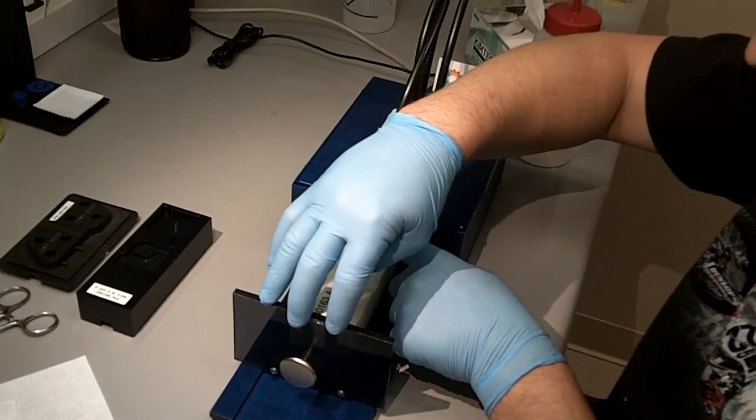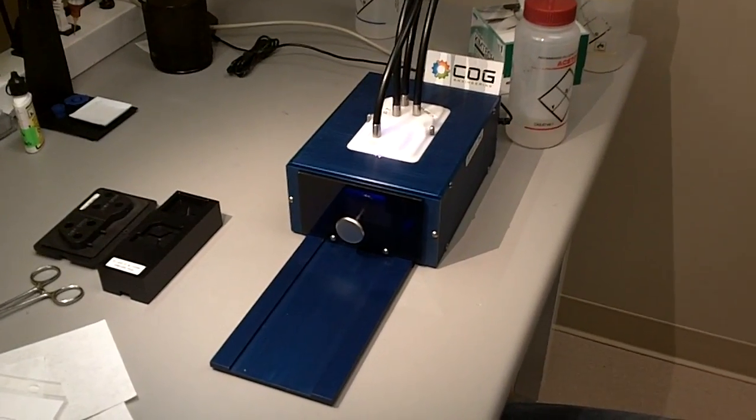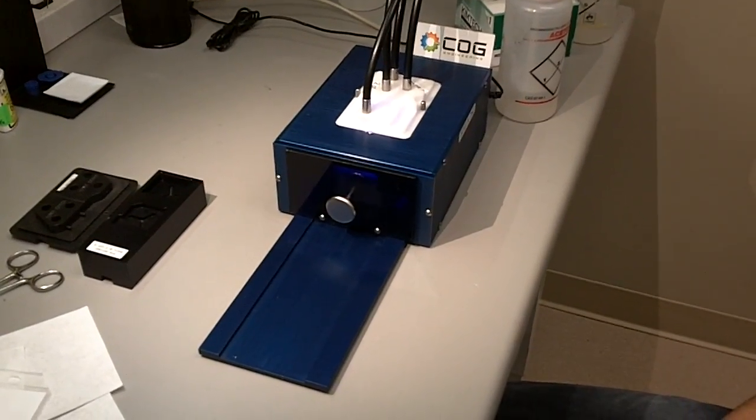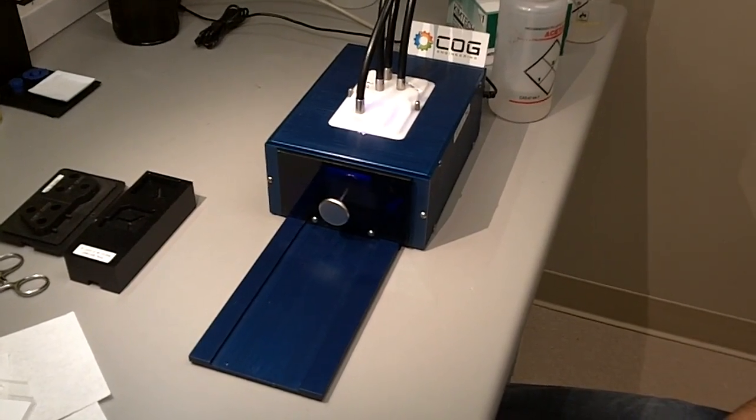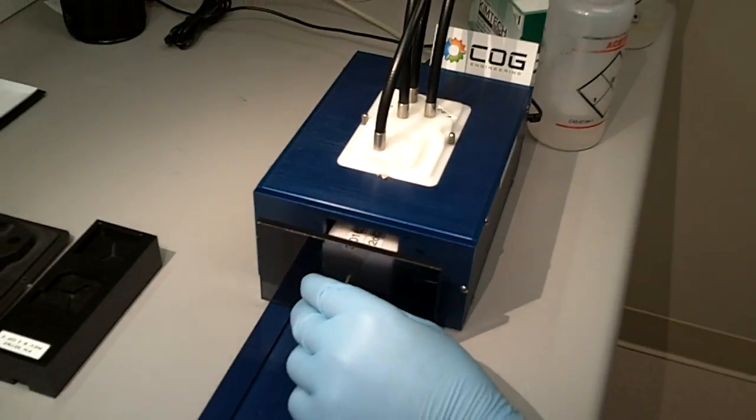As he closes the drawer on the COG engineering supplied UV curing fixture, the door is now locked and the cycle has initiated. You can see some blue light. It's released.